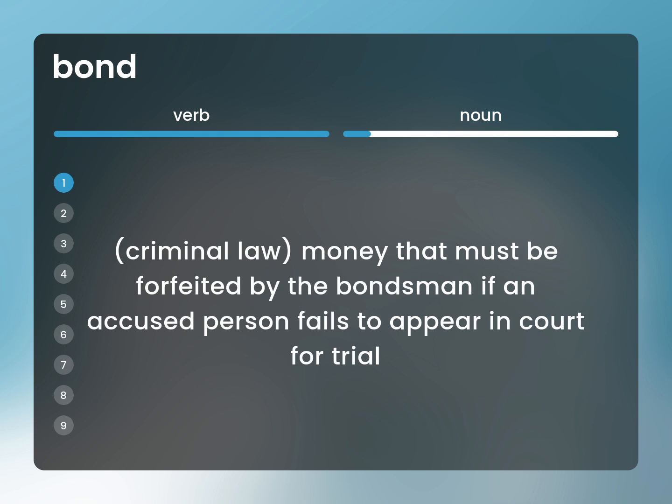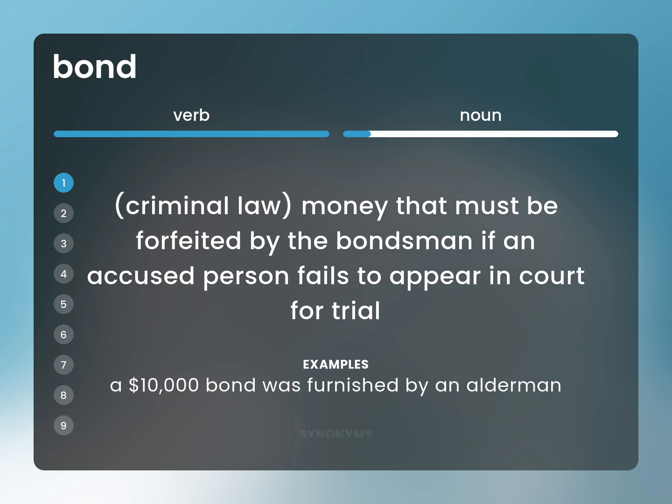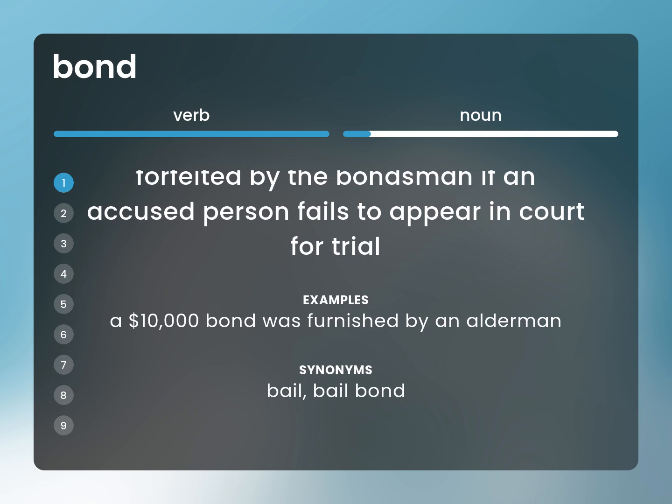Criminal law. Money that must be forfeited by the bondsman if an accused person fails to appear in court for trial. A $10,000 bond was furnished by an alderman. Bail. Bail bond.